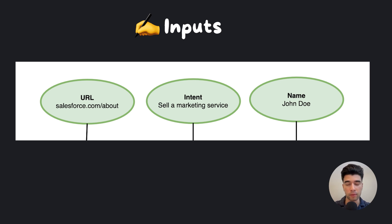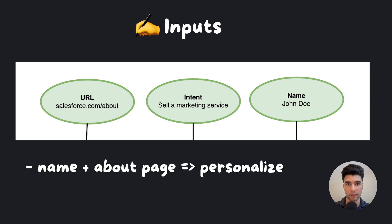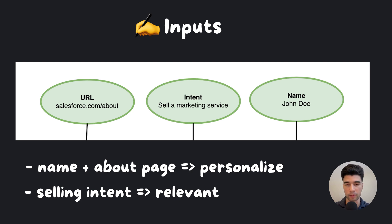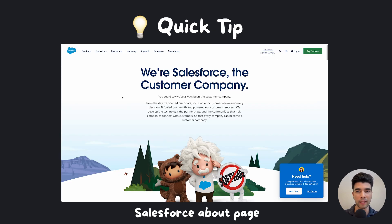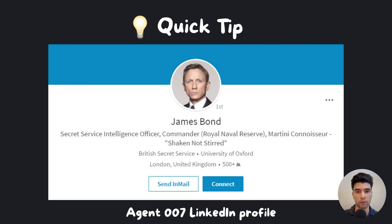The bare minimum we'll need as input for this whole process is the name of the person, your selling intent, and the link to the about page of the company. The name of the person and the about page will help personalize the email for the reader, and our selling intent enables us to make the offering relevant to them. Quick tip: using the company's about page is a good start, but using personal information — say from LinkedIn — would make the email even more compelling.